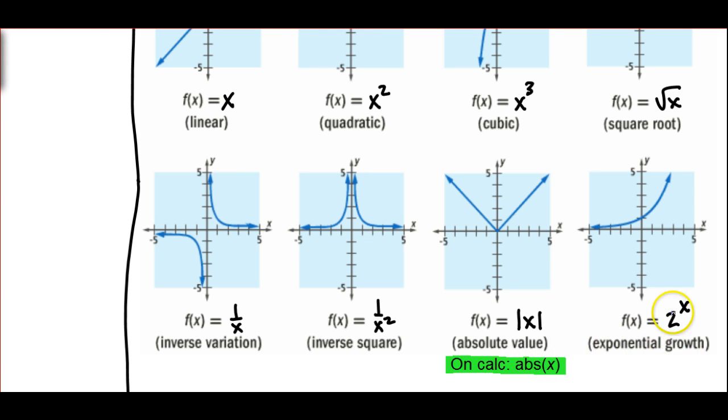The exponential growth equation, we looked at in the last chapter as a, b to the x. Here, the parent graph is simply going to be 2 as your base to the x. Keep in mind that symmetry is something that students should be thinking about or considering for these graphs, as well as which ones have asymptotes and which ones do not. And so that is discussed in class, and if students have questions about that, they are welcome to ask.